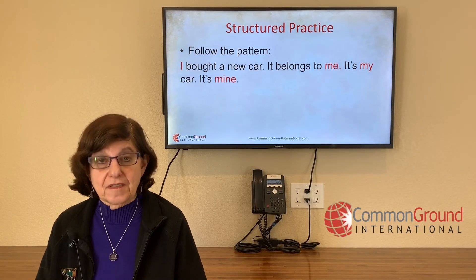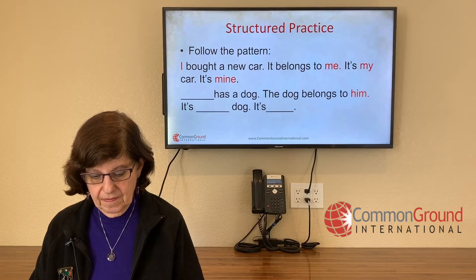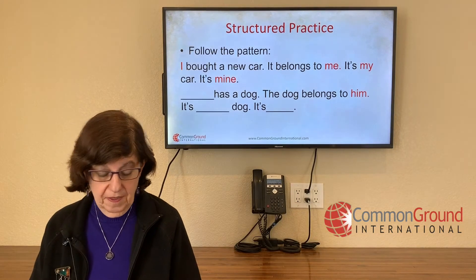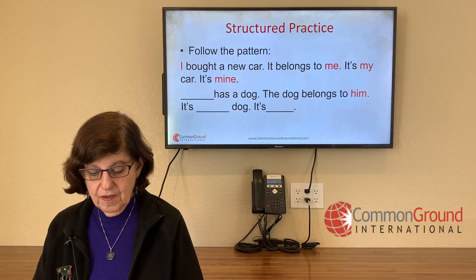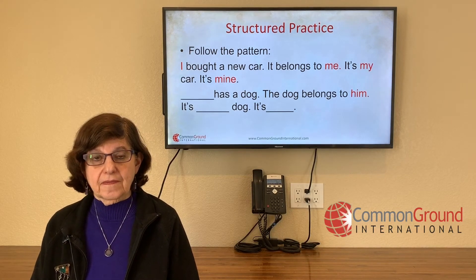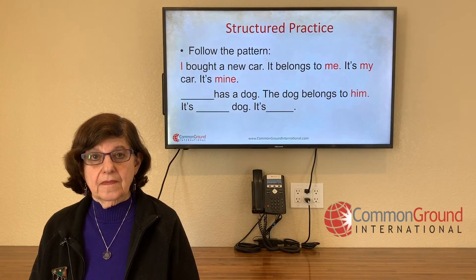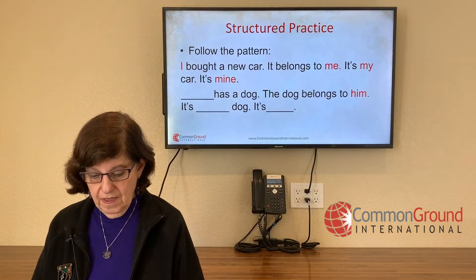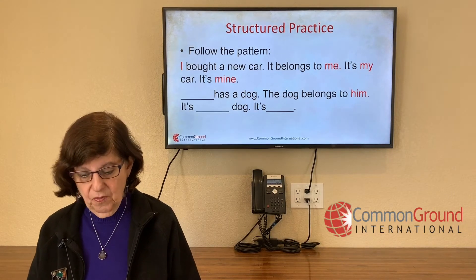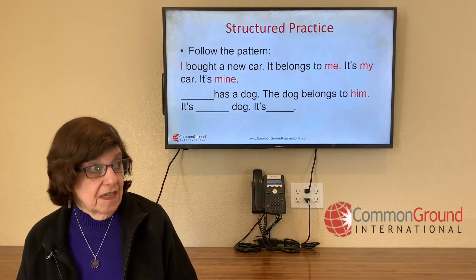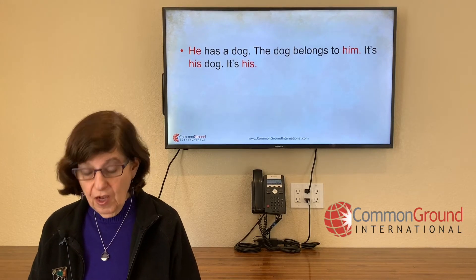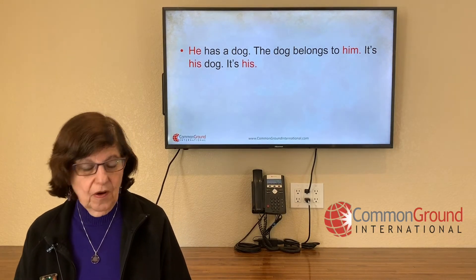Subject, object, possessive adjective, possessive pronoun. 'Blank has a dog. The dog belongs to him. It's blank dog. It's blank.' You're talking about him — third-person singular. You want the subject, I gave you the object. You want the possessive adjective and possessive pronoun. 'He has a dog. The dog belongs to him.' It's his dog. It's his.